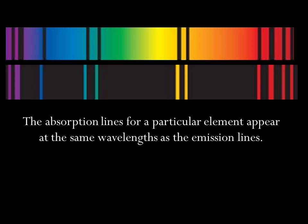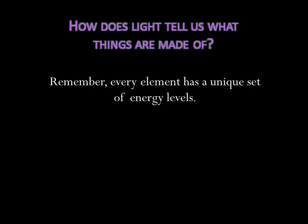The absorption lines for a particular element appear at the same wavelengths as the emission lines for that element. The amazing thing about all of this is that spectra can tell us what elements a distant object is made of. Remember, every element has a unique set of energy levels.